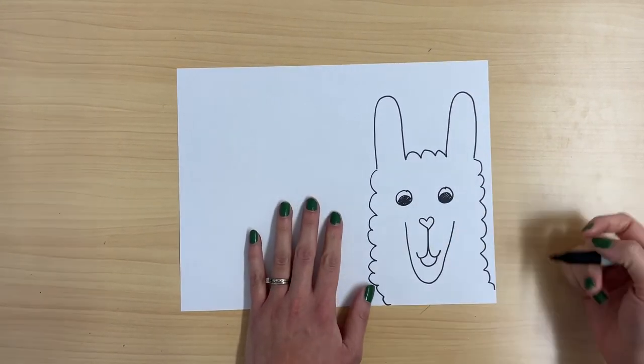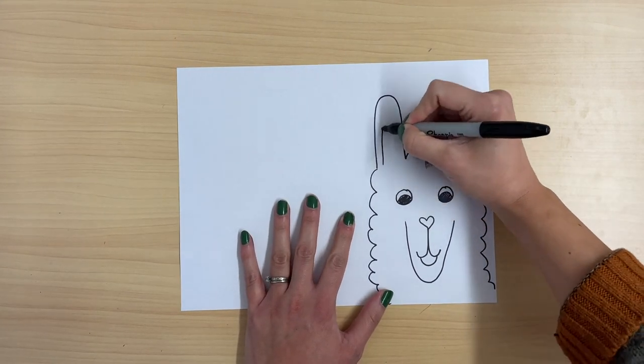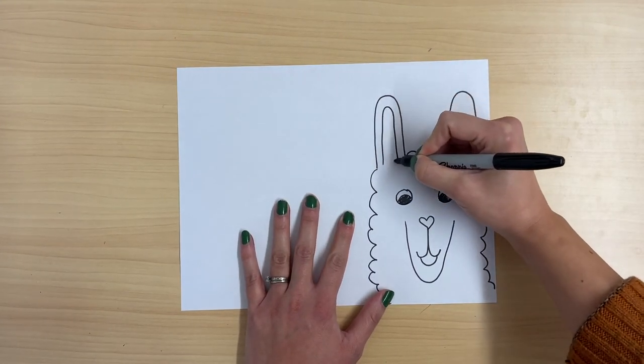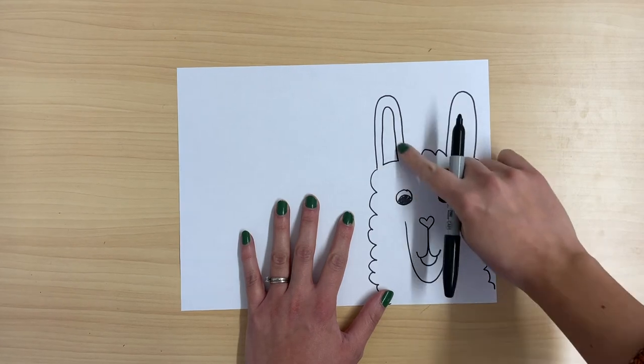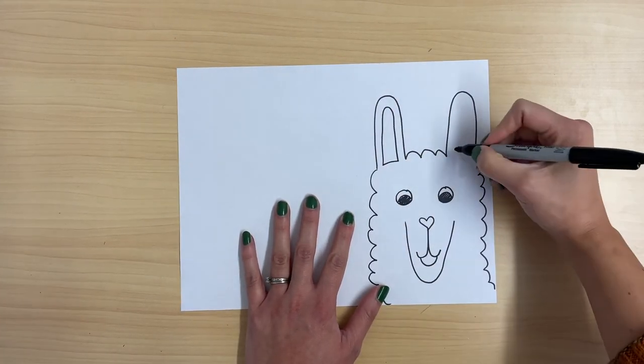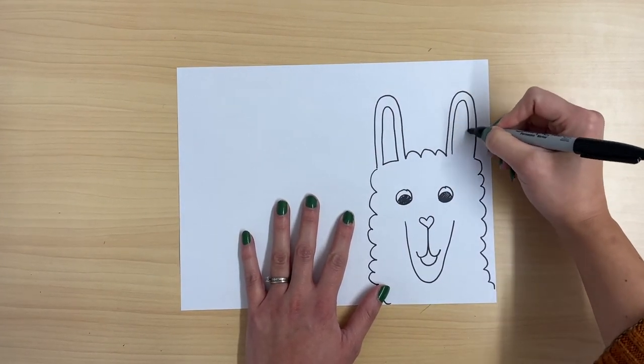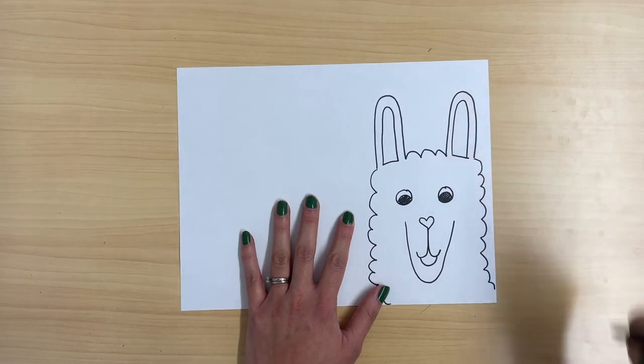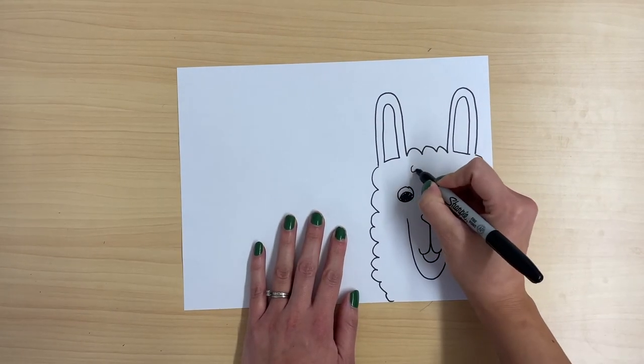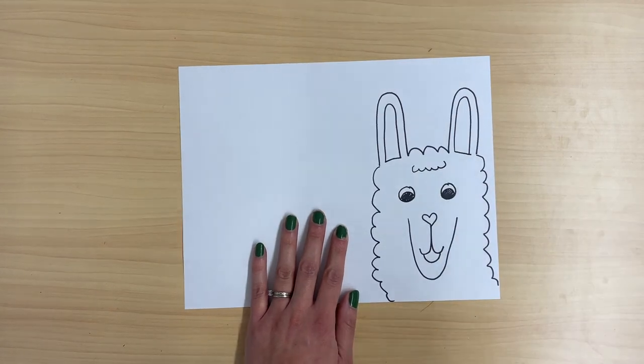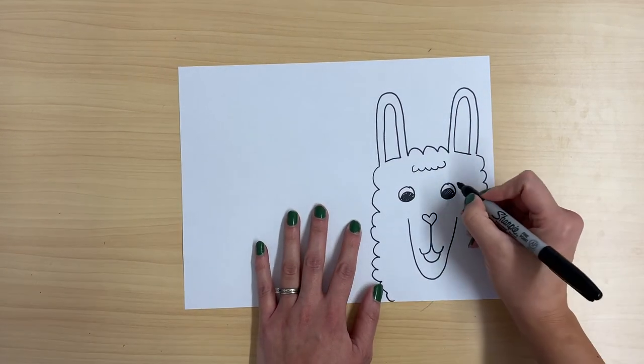The details I'm going to add are I'm going to draw the inside of the ears like this. So I'm drawing a shape similar to what I did for the outside to show the inner part of the ear. Then I'm going to draw another bumpy line to show more fluffiness.